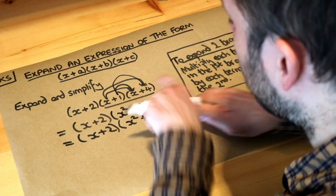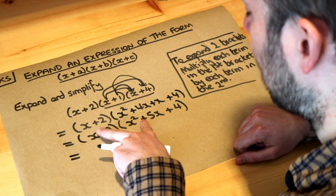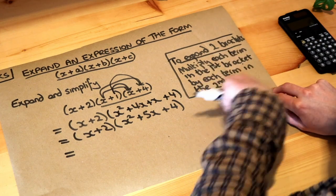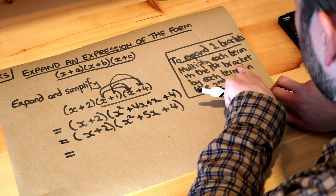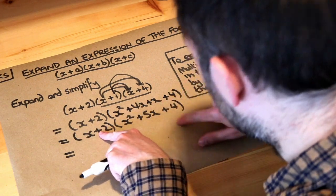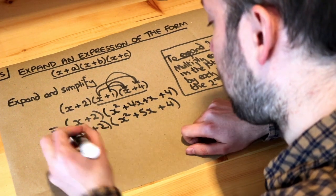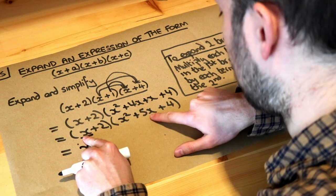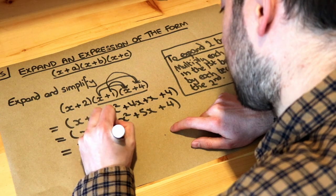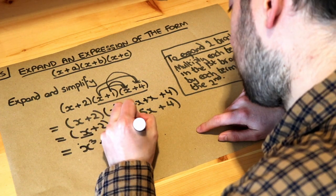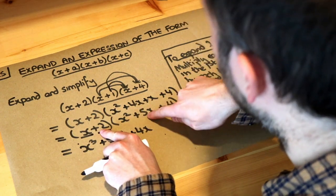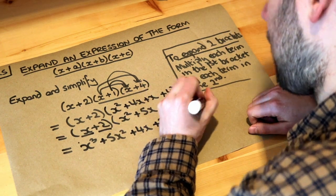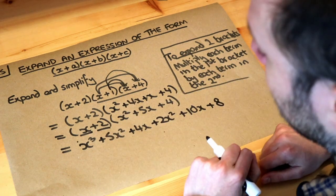So now we've gone from three brackets to two brackets by multiplying two of them together first. We now multiply (x+2) by (x²+5x+4). We apply the same principle: multiply each term in the first bracket by each term in the second. x times x² is x³, x times 5x is 5x², x times 4 is 4x. Then 2 times x² is 2x², 2 times 5x is 10x, and 2 times 4 is 8.